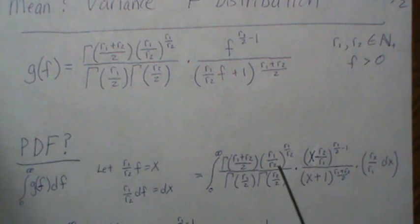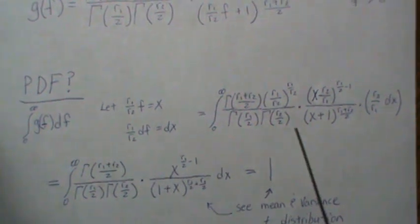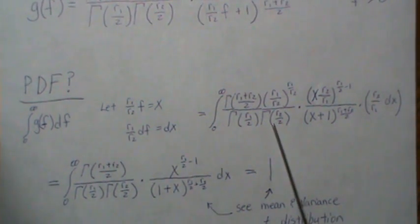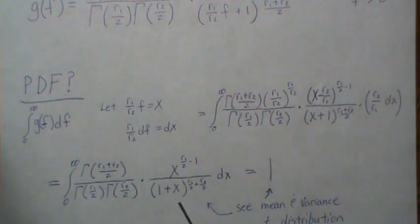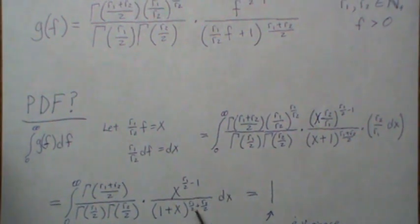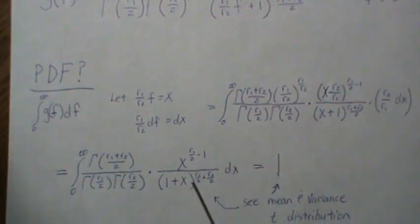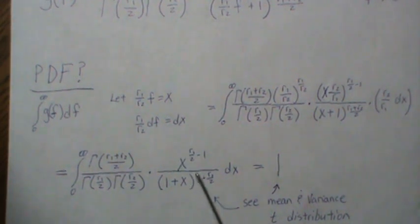And then it brings us down to here. So we still have these constants out front, and we have x to this power, and we have 1 plus x to this power. So this is actually a beta distribution, one of the forms of a beta distribution when the r1 and r2 are integers.